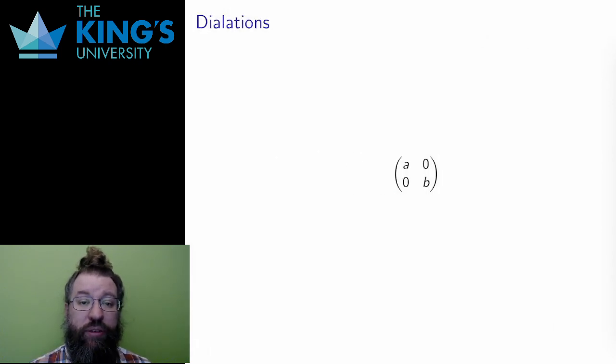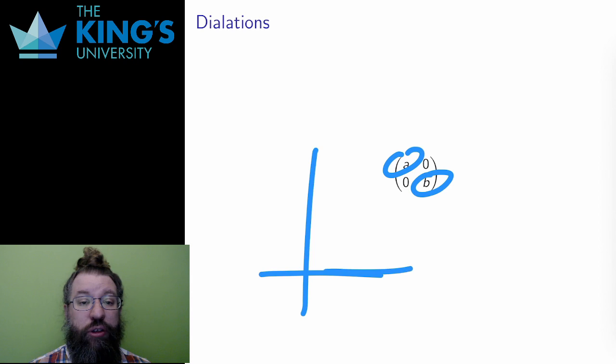I've already talked about dilation matrices in a previous video. They were matrices with zeros everywhere except for the diagonal of the matrix. The matrix will dilate by a factor of a in the x direction and by a factor of b in the y direction. If either a or b is negative, this also involves a flip over that axis.